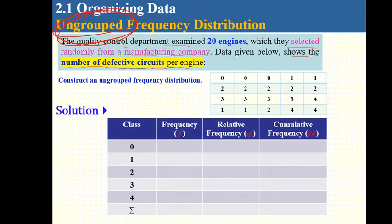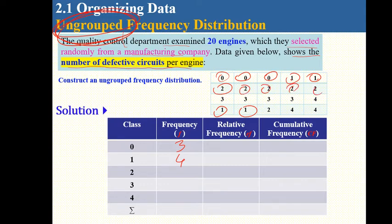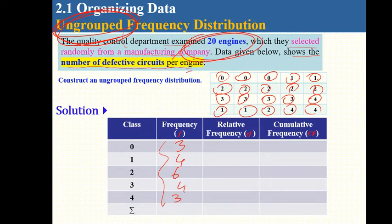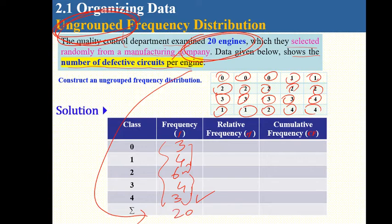For zero defects, counting gives 3. For one, we get 4. For two, we count 6. For three, we get 4. For four, we have 3. The total should be 20 engines — let's check: 3 + 4 + 6 + 4 + 3 = 20. So we counted them correctly.